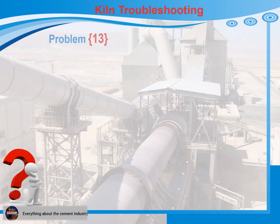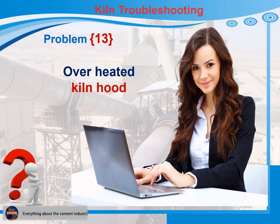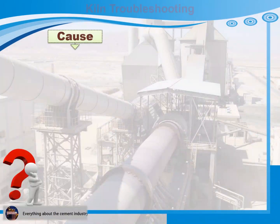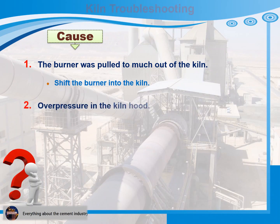Problem 13: Overheated kiln hood. Cause 1: The burner was pulled too much out of the kiln. Recommendations for action: Shift the burner into the kiln. Cause 2: Overpressure in the kiln hood. Recommendations for action: Optimize the kiln hood pressure control.